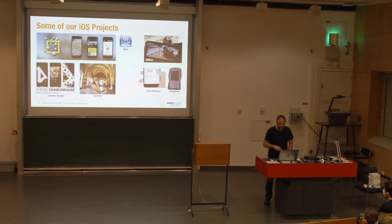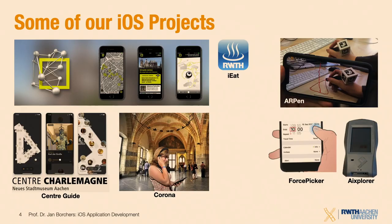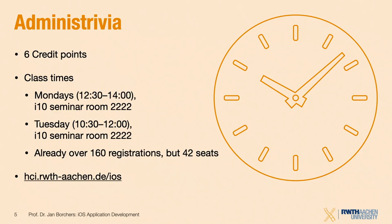A couple of administrative details: this is a six-credit class. Class times are Mondays from 12:30 to 2:00 and Tuesdays from 10:30 to 12:00. We're in this large room today because we had a very large number of registrations and weren't sure how many would show up. We'll move back to the seminar room once we've determined the actual class size. We only have 42 seats available.